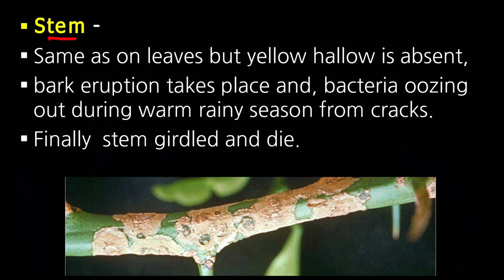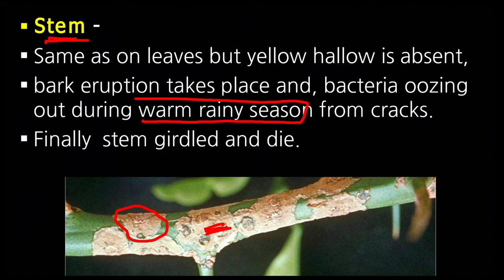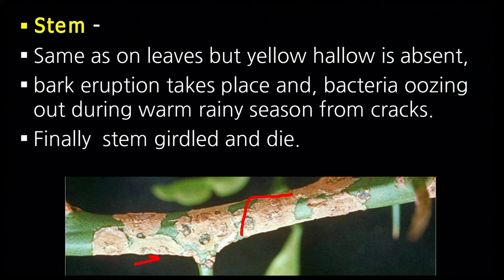Symptoms in stems: the same type of symptoms occur on the stem, but the yellow halo is absent. The area around the spots on the stem does not turn yellow. After that, cracking occurs on the stem, and bacteria come out from these cracks during warm and rainy season. Finally, the stem girdles and dies — as you can see in the picture, the spots encircle the entire stem and the upper portion of leaves above it die.